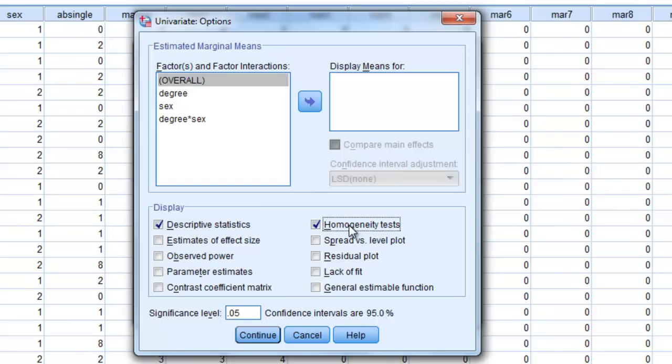I want my homogeneity test. That gives me Levene's test. And you may want to know your estimates of effect size. This will give you your partial eta-square estimates. I usually don't ask for that because I think that omega-squared is a better estimate of your population effect size. But these are a few options you may want to look at.